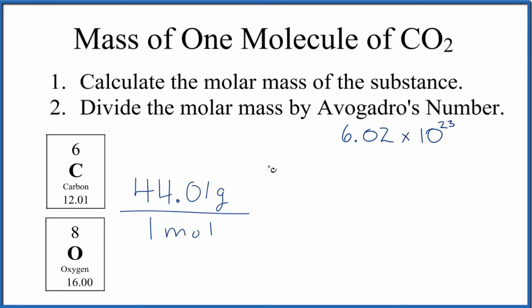Now we're going to use a conversion factor to find out the mass of one molecule of carbon dioxide. We know that one mole of any substance is made up of 6.02 times 10 to the 23rd particles. Particles are atoms or molecules or ions.